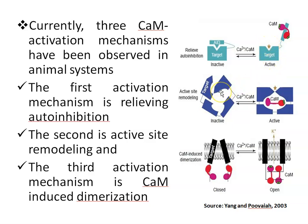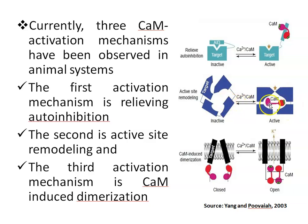The second mechanism is active site remodeling. In the inactive state, the loop is completely disordered. Upon Calmodulin binding, the protein transitions to its active form.